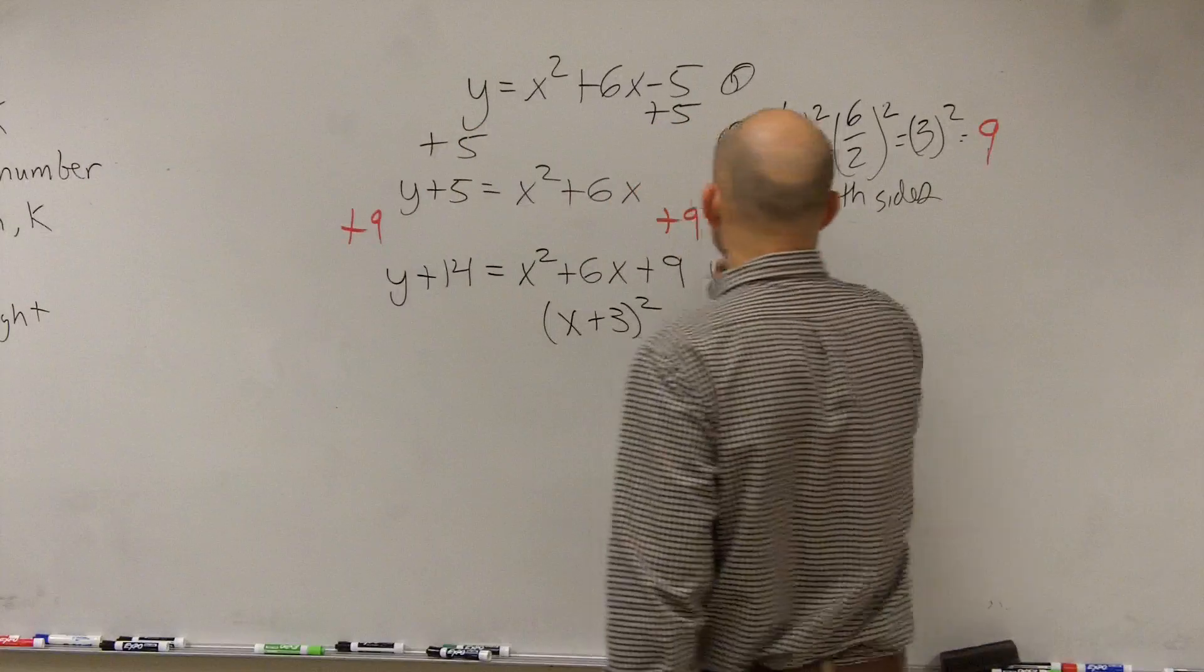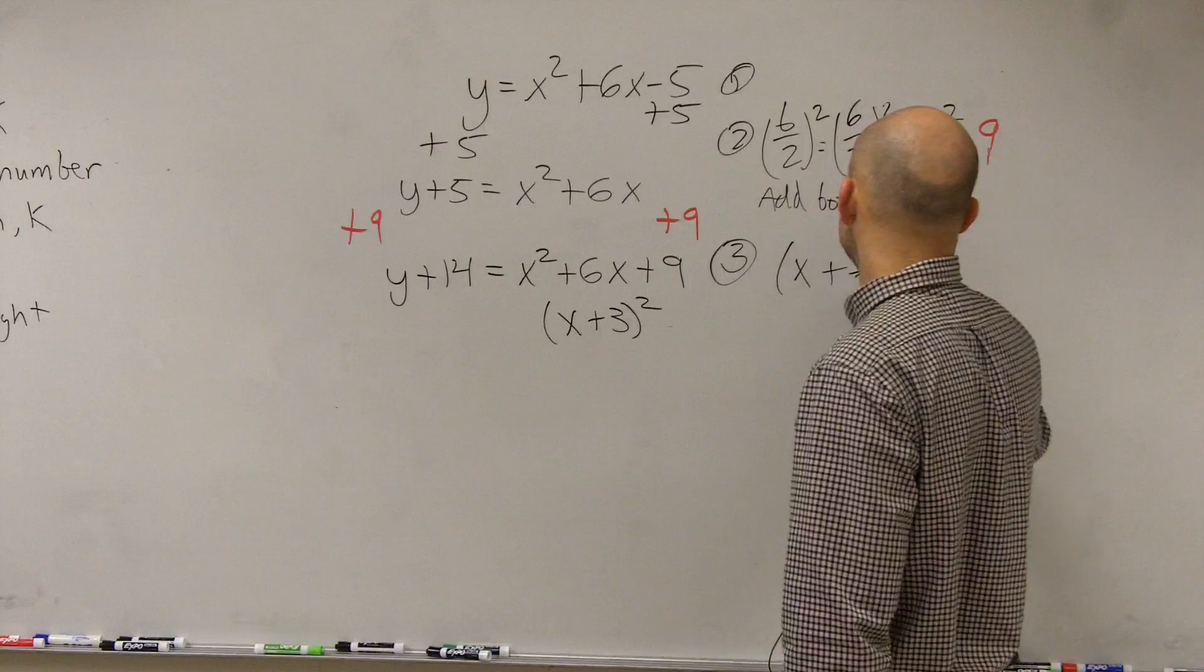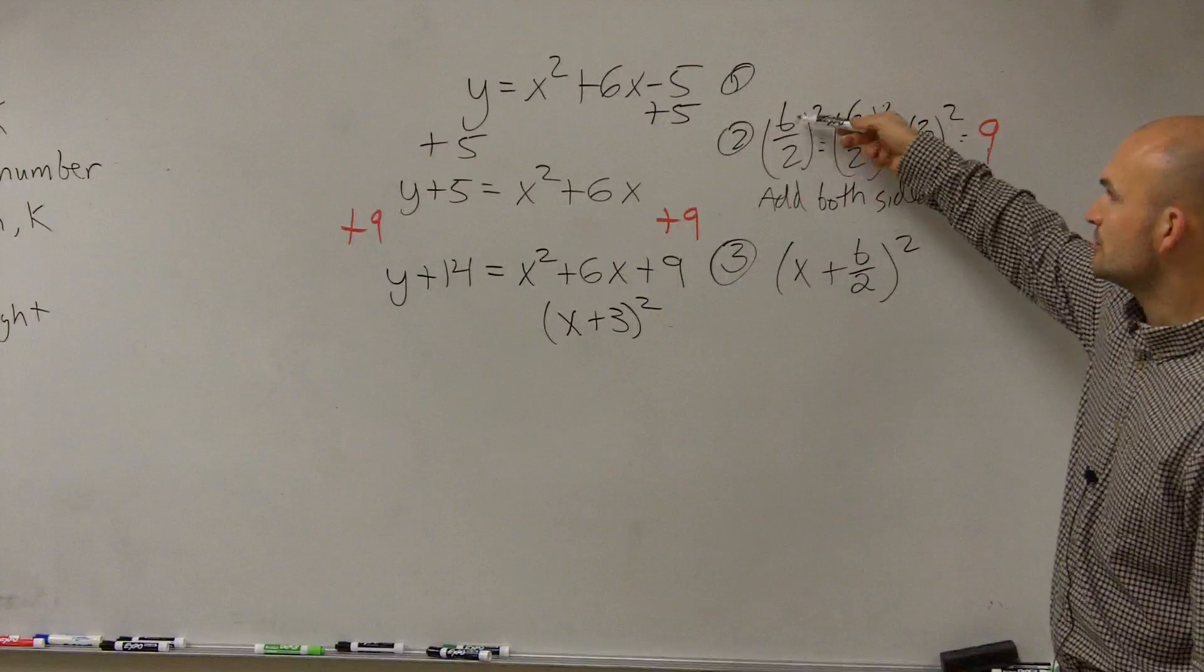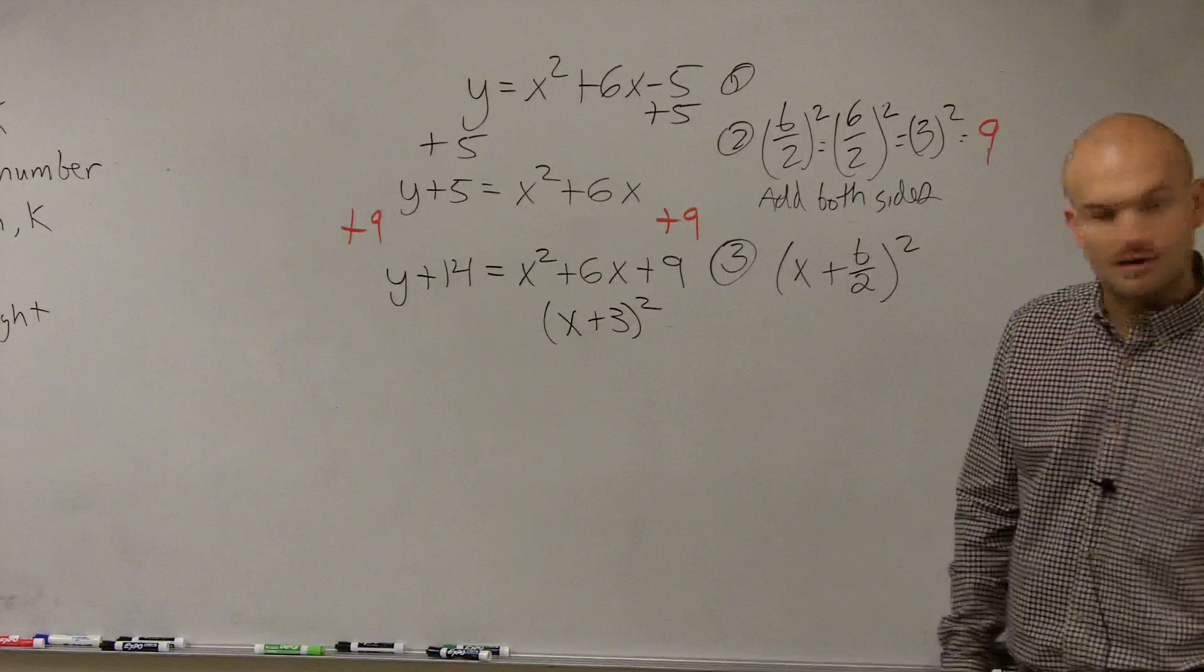If you get stuck on the factoring part of it, remember, it's always x plus b divided by 2 squared, which you could go over here and say, what was b divided by 2? Well, that was 3. So it's going to be x plus 3 squared, right?